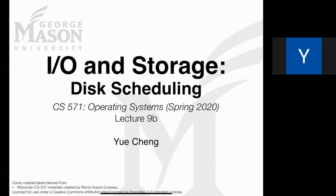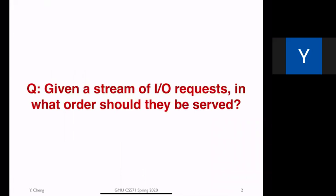This is the second video of the lecture 9v series, where we'll be talking about disk scheduling policies. At a very high level, the fundamental question to ask given this topic is: given a stream of bio requests, in what specific order should all these queued-up requests be served?